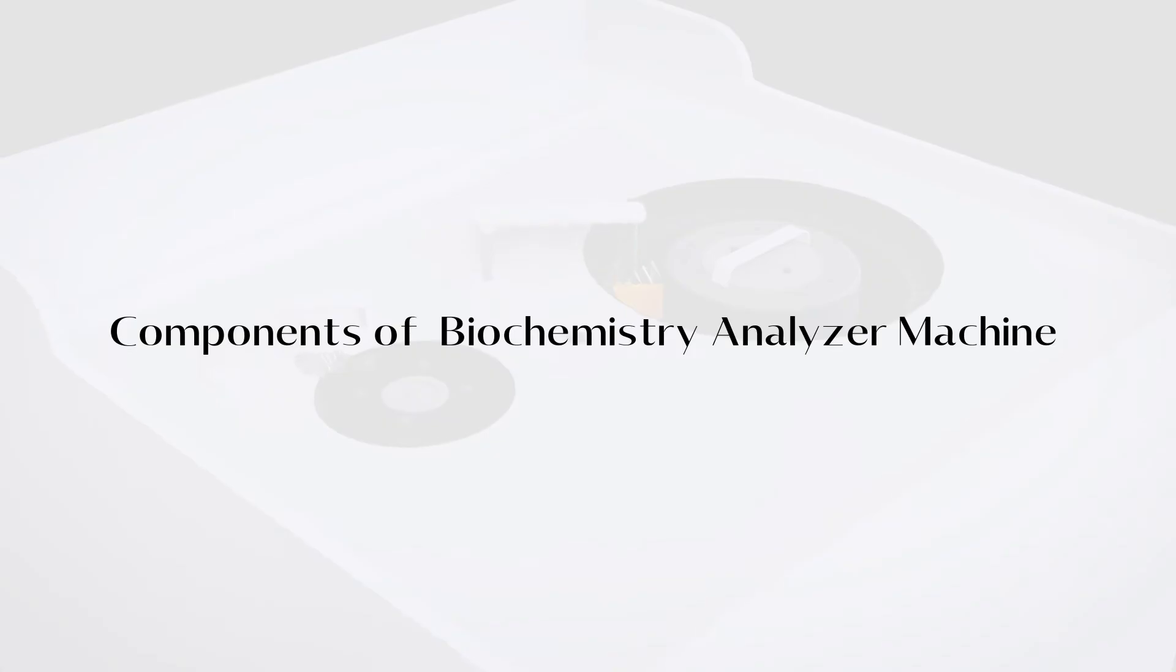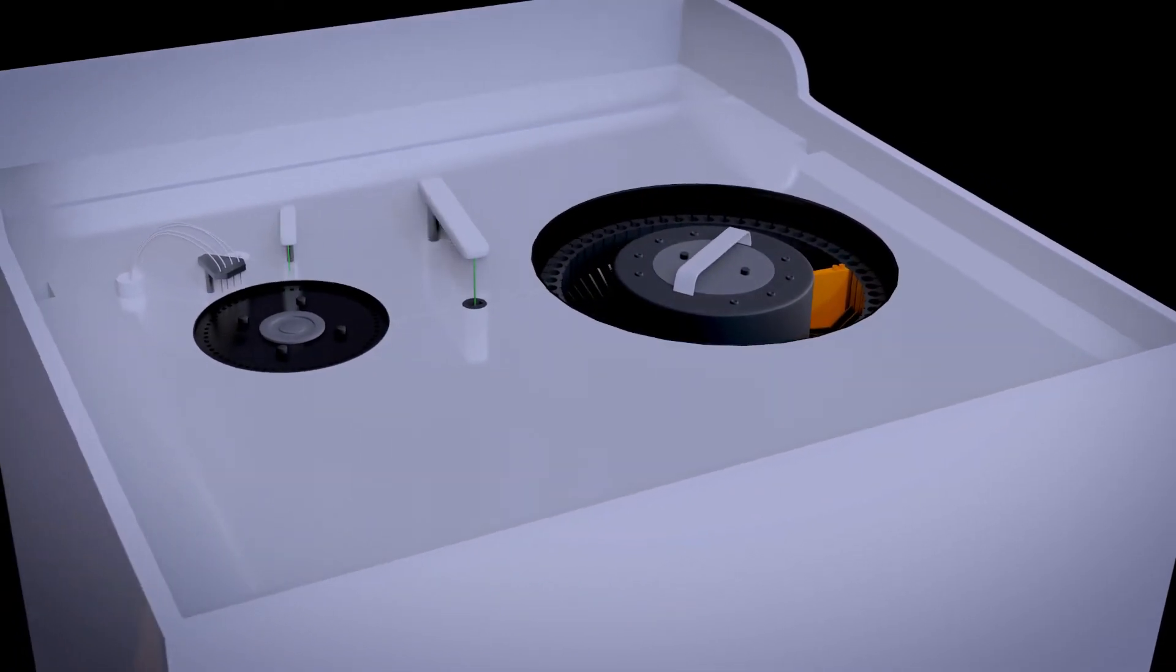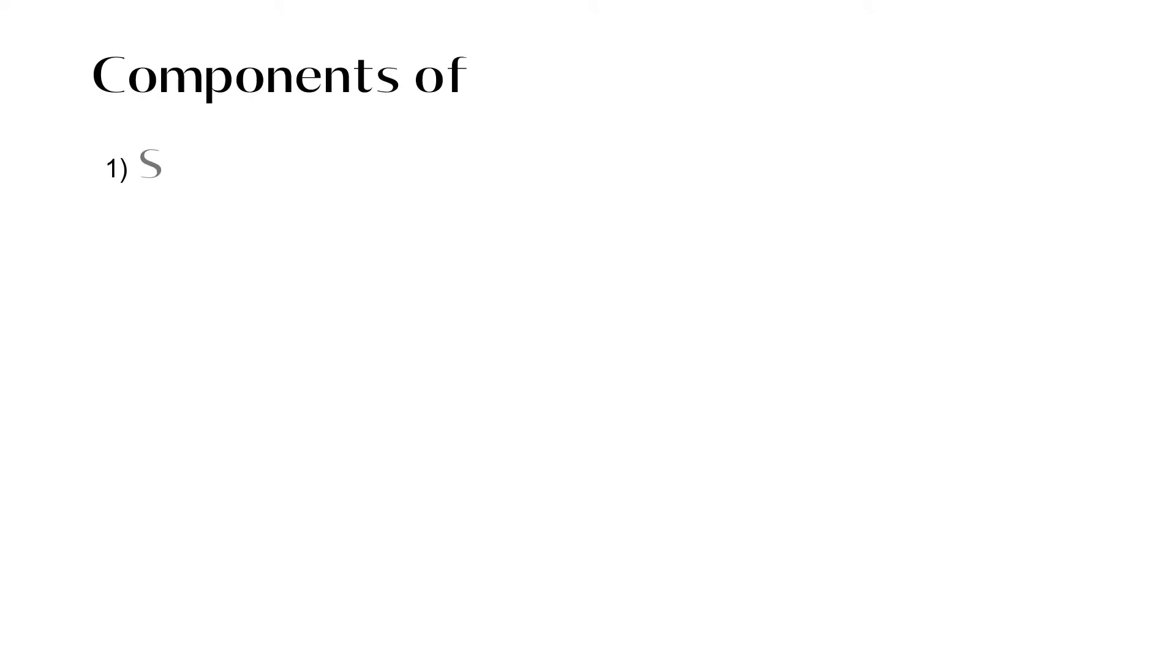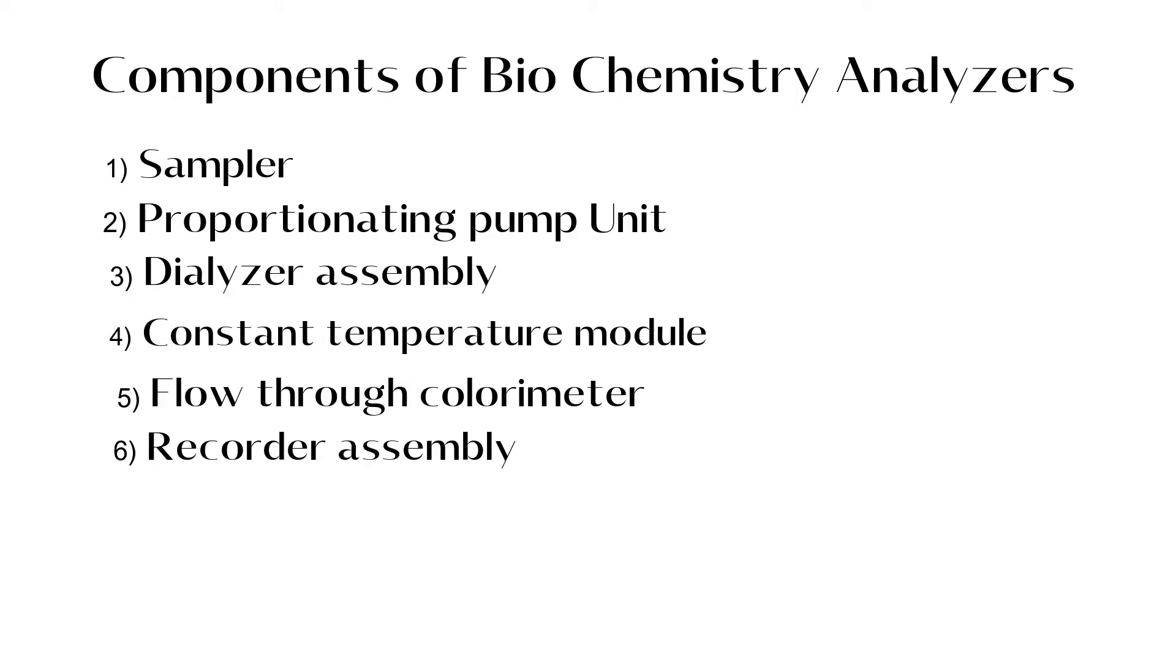Now let's look into the components of a biochemistry analyzer. Major components of biochemistry analyzer machines are the sampler, proportionating pump unit, dialyzer assembly, constant temperature module, flow-through colorimeter, and recorder assembly.